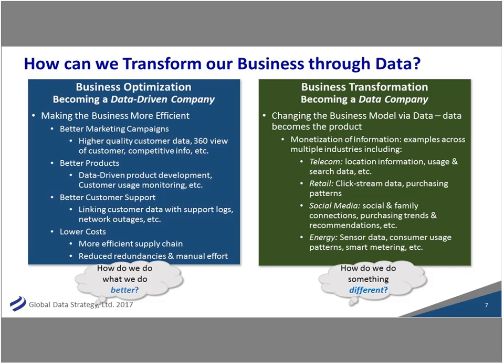The second way — becoming a data company — is newer. This means either literally monetizing your information or selling it to others. For example, a telecom company I worked with sold anonymized data to city planners to track travel patterns and optimize rail networks. A retail company without a loyalty program used cell phone footfall analytics to see where people were going in stores, what they were buying, and which in-store ads were working best.